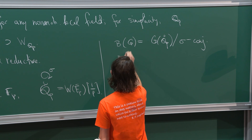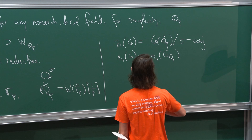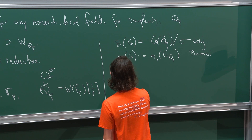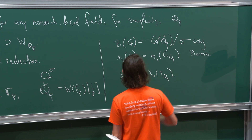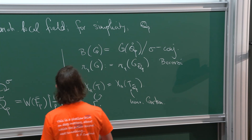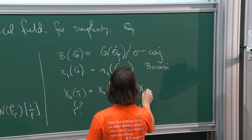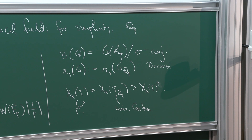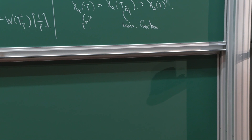Pi one of G will be pi one of G over QP-bar — it's the Borovoi fundamental group. When I talk about X lower star of T, I really mean T over QP-bar, which is some kind of universal cocharacter lattice. In particular, it has a gamma action, and it also has a dominant part. Back to topic.